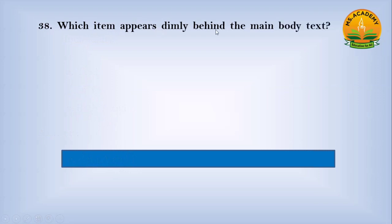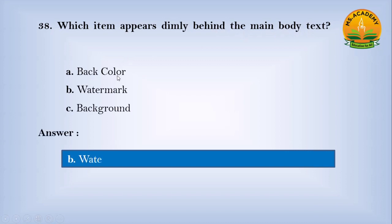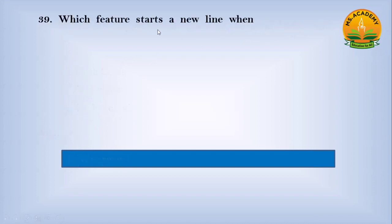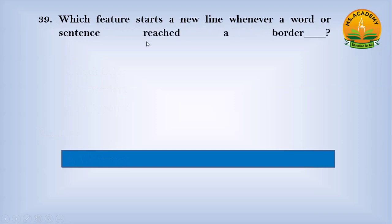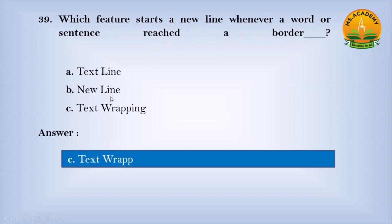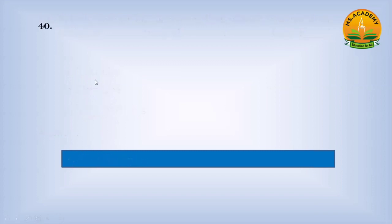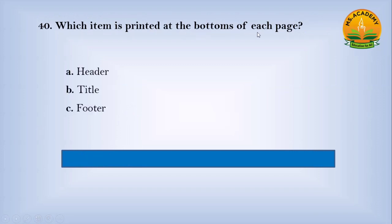Which item appears dimly behind the main body text? Option A: back color, option B: watermark, option C: background. Answer: B — watermark. Which feature starts a new line whenever a word or sentence reaches a border? Option A: text line, option B: new line, option C: text wrapping. Answer: C — text wrapping. Which item is printed at the bottom of each page? Option A: header, option B: title, option C: footer. Answer: C — footer.